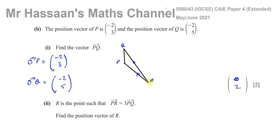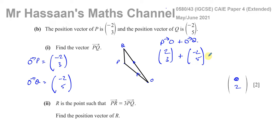Another way to find the vector from P to Q is to go from P to O and then from O to Q. P to O is the opposite of O to P, so it's (2, -3). Then add O to Q which is (-2, 5). Adding these together: 2 + (-2) = 0, and -3 + 5 = 2. So the answer is (0, 2). That's the more mathematical way of doing it.